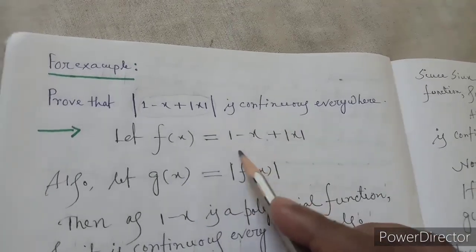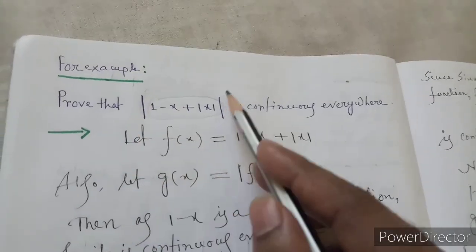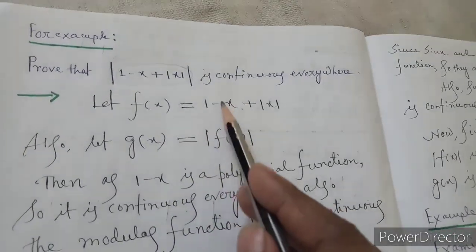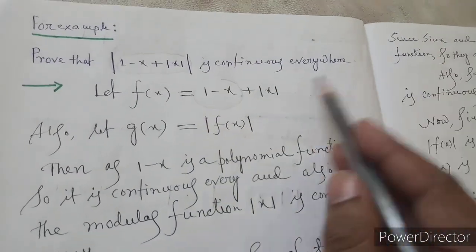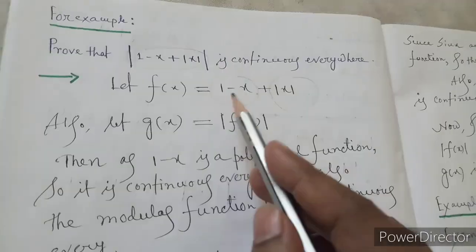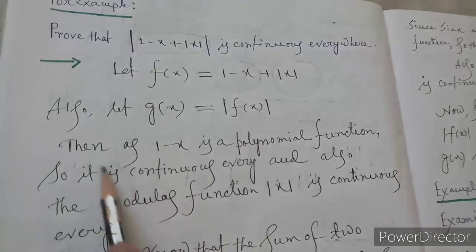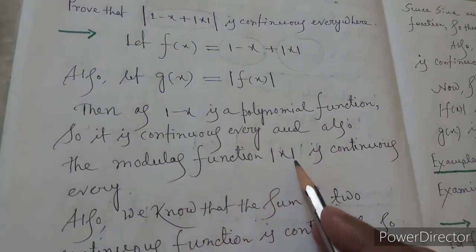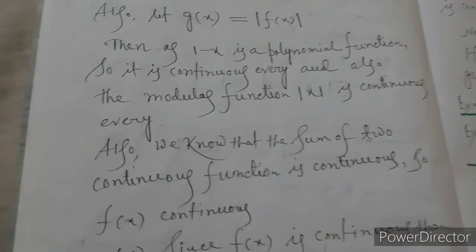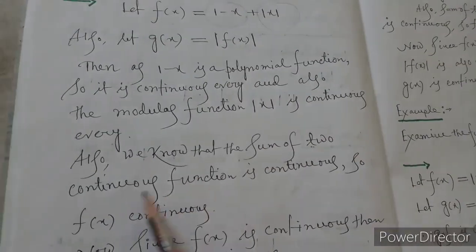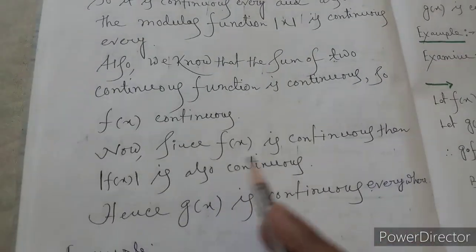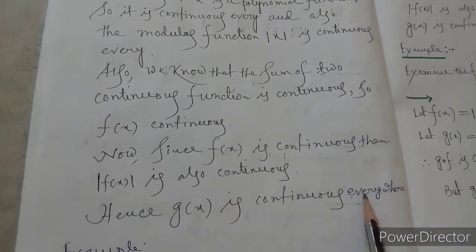Let f(x) equal to 1 minus x plus mod x, and let g(x) equal to mod of f(x). Here, 1 minus x is a polynomial function, so it is continuous everywhere, and mod x is a modulus function, so it is also continuous everywhere. The sum of two continuous functions is continuous, so f(x) is continuous everywhere. Since f(x) is continuous, mod f(x) is also continuous, hence g(x) is continuous everywhere.